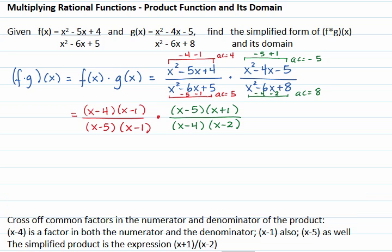Our next step is to cross off common factors in the numerator and denominator of the product. x minus 4 is common in the numerator and denominator. x minus 1 is common, and so is x minus 5. The simplified form of the product function is x plus 1 over x minus 2.